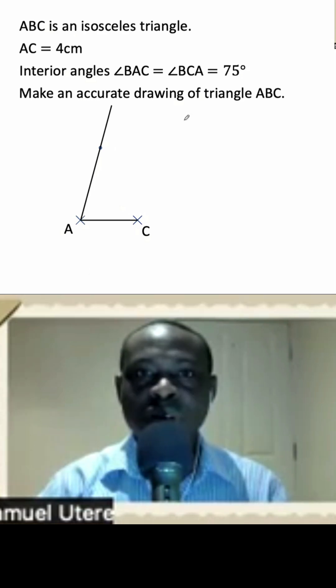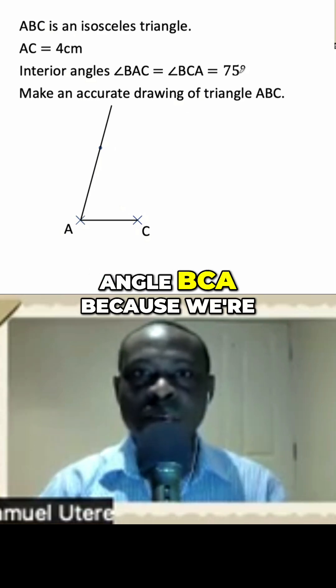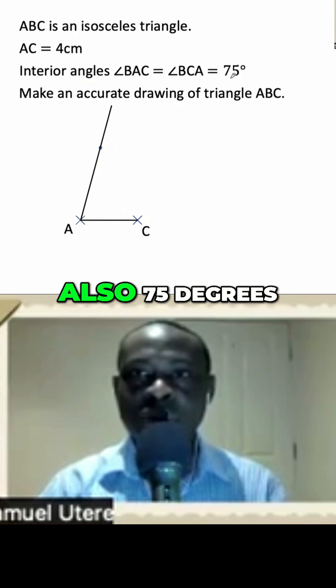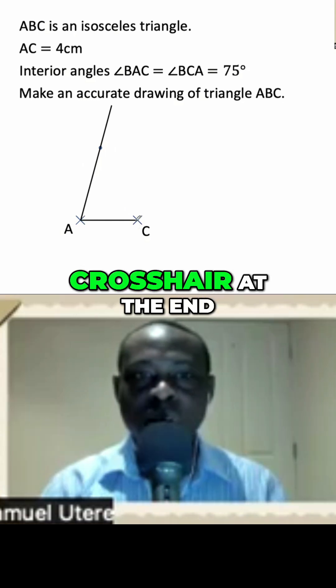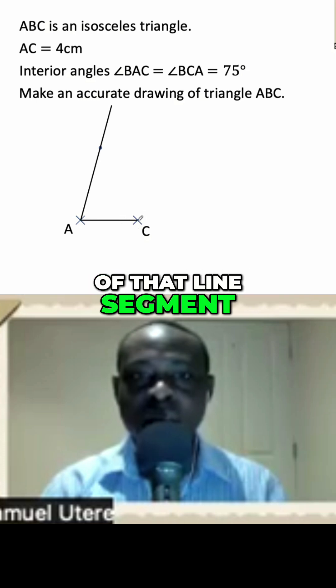Next, we want to measure angle BCA because we're told that that is also 75 degrees. So we'll position our crosshair at the end of that line segment.